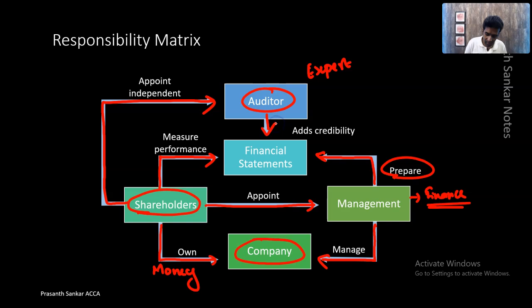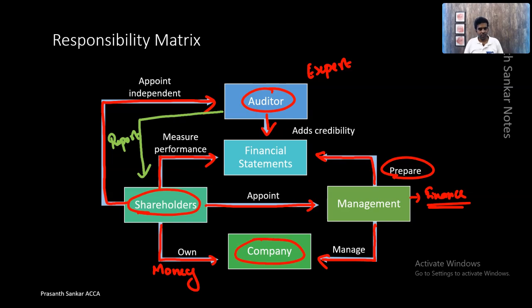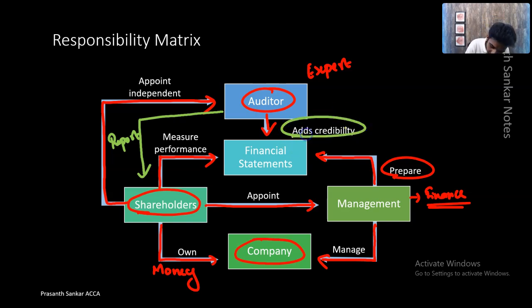The auditor, who claims himself to be the expert, will read the financial statements and simply give his opinion — a report to the shareholder. He will look at the financial statement prepared by the management and give a report to the shareholders. That report issued by the auditor will improve the credibility — meaning trustworthiness. If the financial statement looks good and it's confirmed by the auditor, the shareholder will start trusting the management. This is the entire responsibility metrics for an auditor.